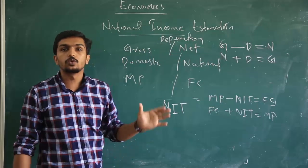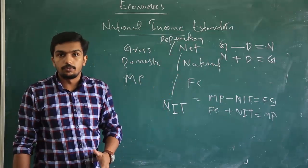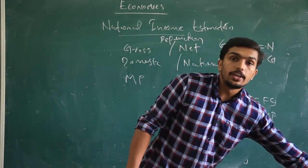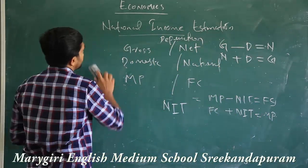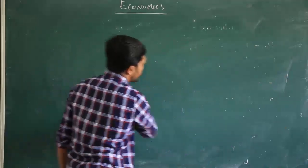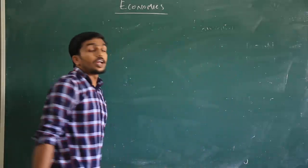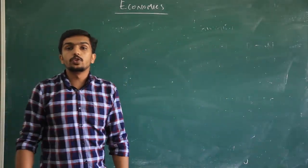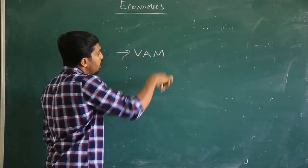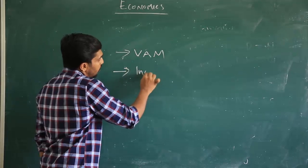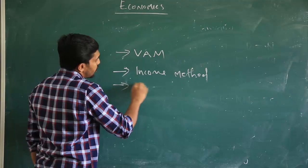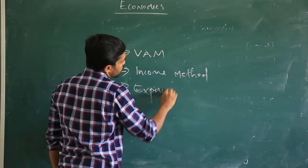These are the three main components we use to identify national income. Now we are going to analyze the methods of calculating national income. There are three methods normally used: the first method is the Value Added Method, the second method is the Income Method, and the third method is the Expenditure Method.